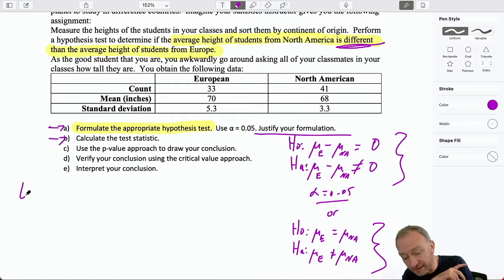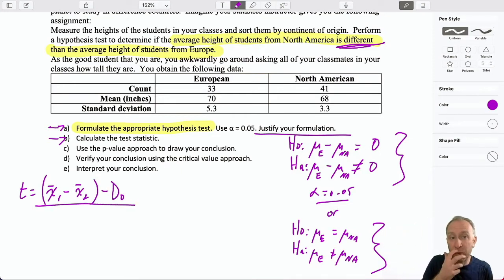Now we want our test statistic. So now the process, you guys should be seeing the process here is very similar. Formulate the test, calculate the test statistic. This is where that assumption about the equality of the variances is going to come into effect.